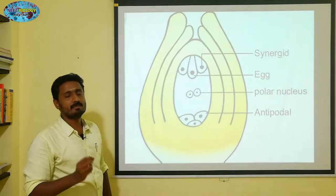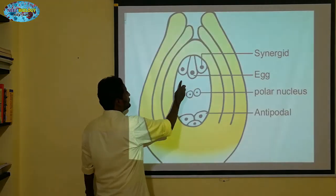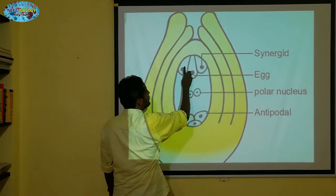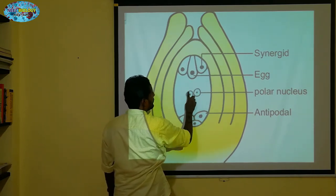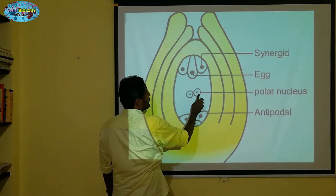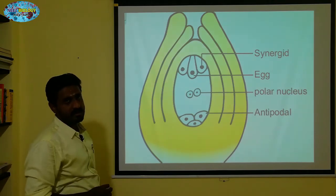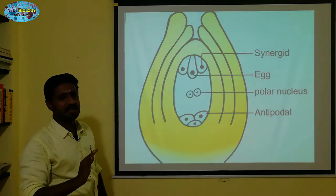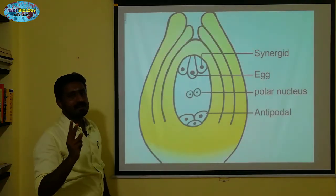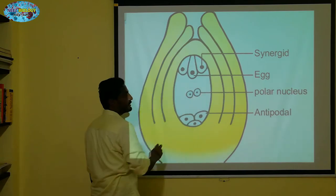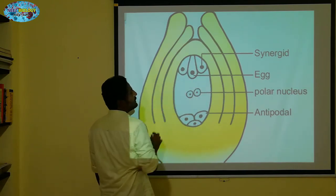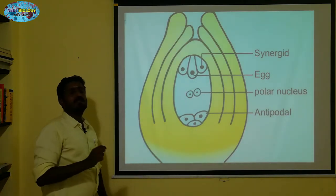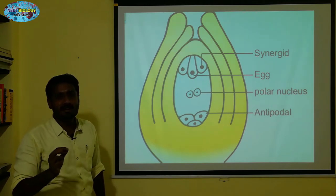That's called Endosperm, as well as its functions. Here we have the polar nuclei — one of them. That's why there are 2 polar nuclei and there are antipodal cells. During fertilization, two male gametes enter. One is fusing with the secondary nuclei, and another one is fusing with the egg. The egg fusing with the male gamete is called syngamy. The secondary nuclei fusing with the male gamete is called triple fusion.